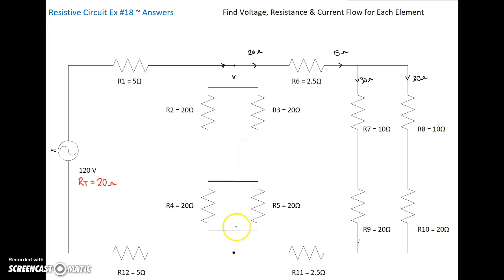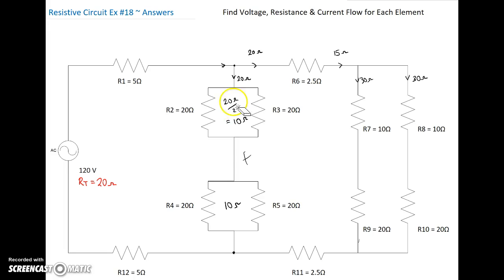Now we've got to find the resistance in this rung. We have 20 and 20 — R2 and R3 is going to be 20 ohms. 20 ohms divided by 2 paths gives us 10 ohms. Here again, 20 and 20 — current goes through those guys equally, so our value there is 10 ohms as well. So in this rung we have 10 ohms plus another 10 ohms, giving us 20 ohms in this rung.